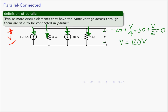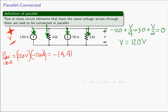The question was: what's the power absorbed? The power absorbed by the 120 amp source: we have 120 volts across it, and the current directed into the positive terminal is negative 120 amperes, so the power absorbed is negative 14.4 kilowatts.